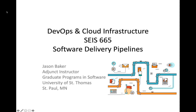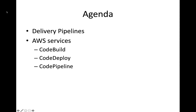In a DevOps organization, we leverage these software delivery pipelines to automate the process of delivering software to our customers. In this week's lecture, I will start out by talking about software delivery pipelines and walk you through all of the different stages that you might find in a typical delivery pipeline. I will then talk about three different AWS services which we can use to build out a delivery pipeline: CodeBuild, CodeDeploy, and CodePipeline. Let's get started.